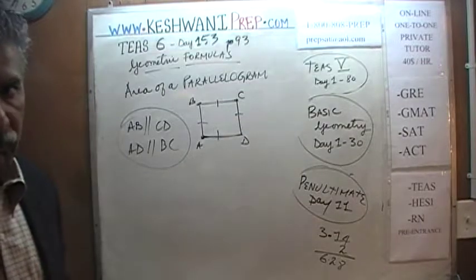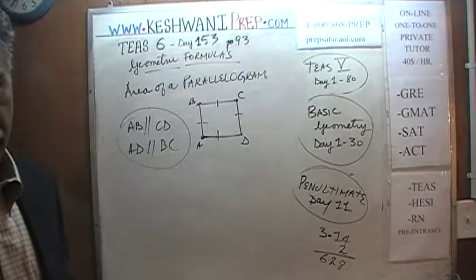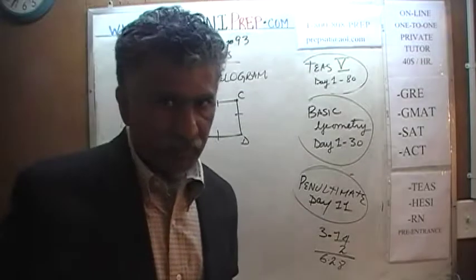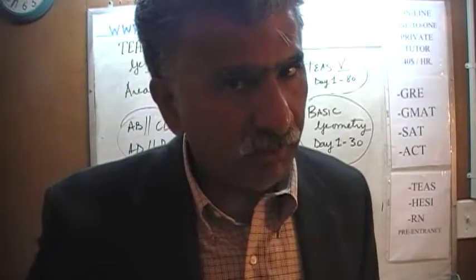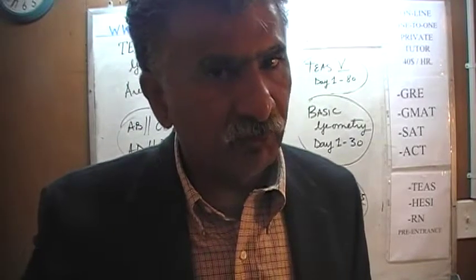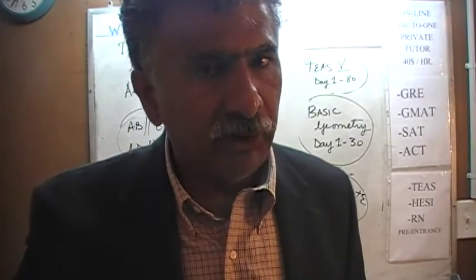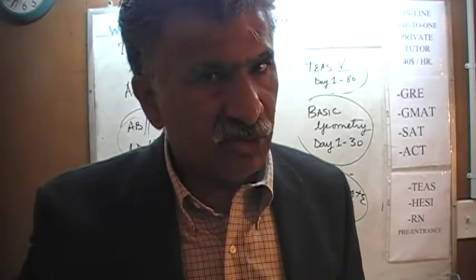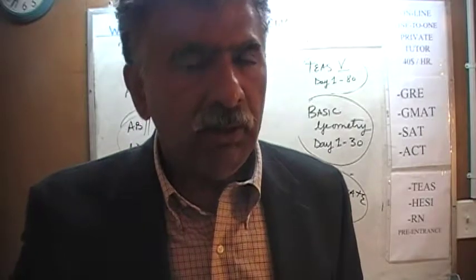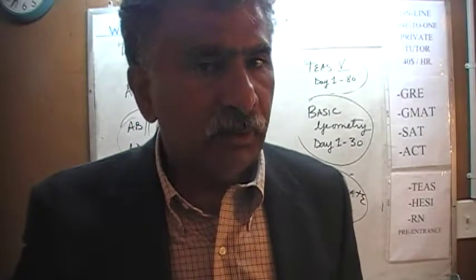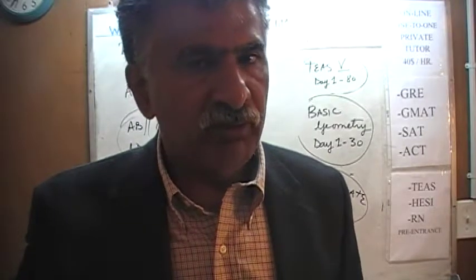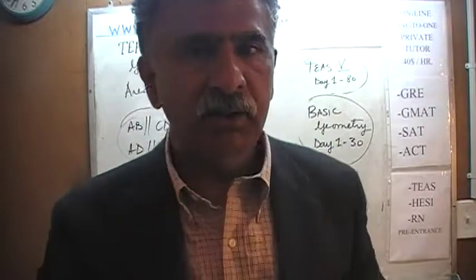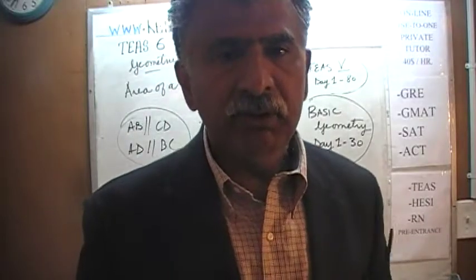All squares are parallelograms, but all parallelograms are not squares — because squares, in addition to fulfilling this condition that opposite sides are parallel, have a couple of other conditions. A square is a very limited, very constricted shape. It doesn't have too many freedoms.